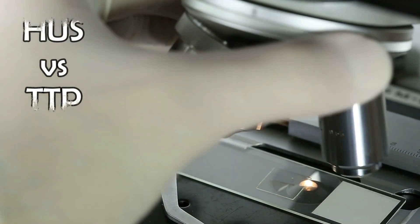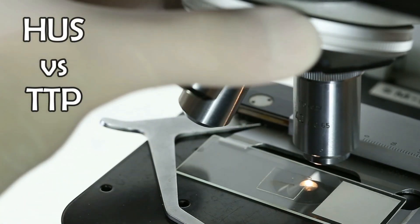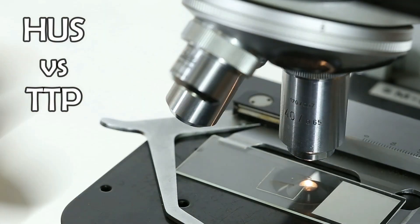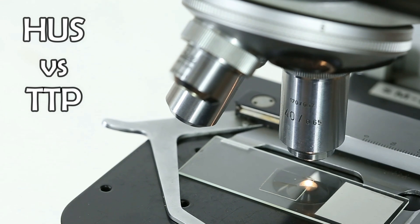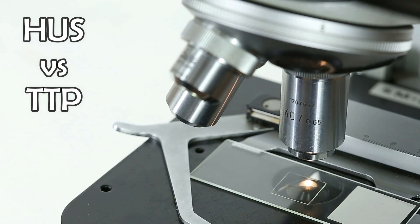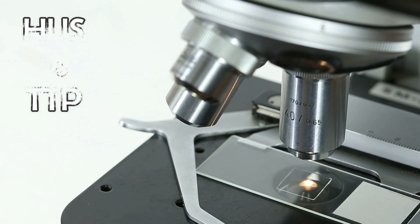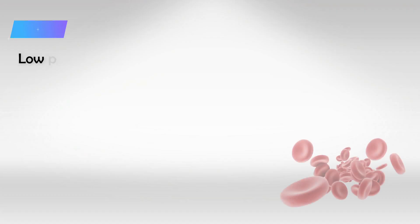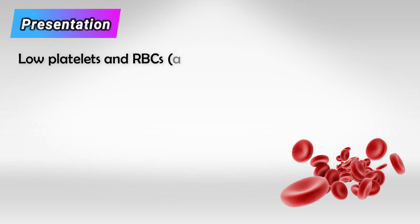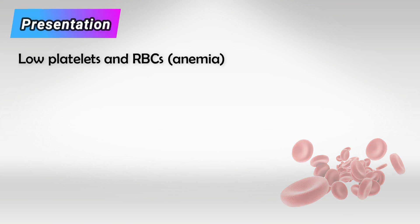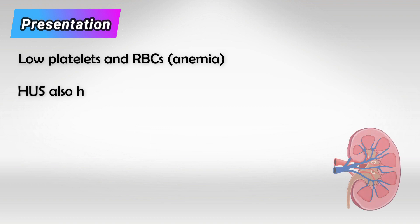Welcome back. In this video we'll compare hemolytic uremic syndrome with thrombotic thrombocytopenic purpura. They both present the same with decreased platelets and RBCs, but there is also uremia in HUS.